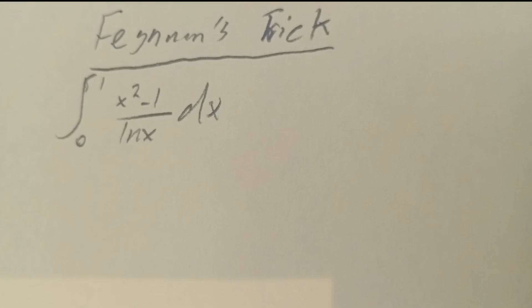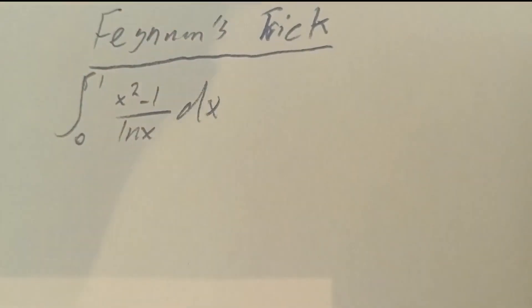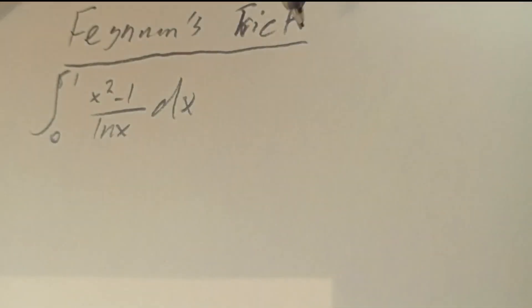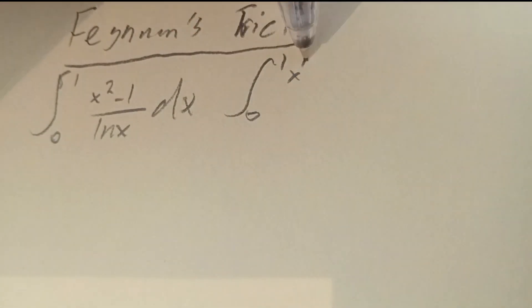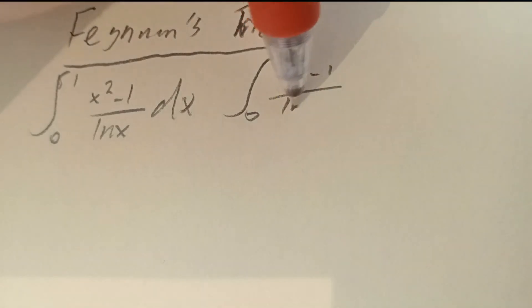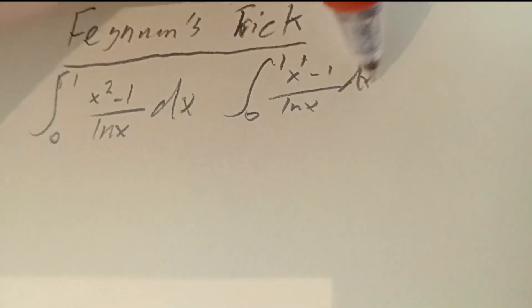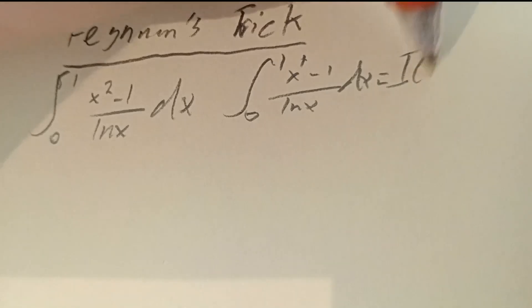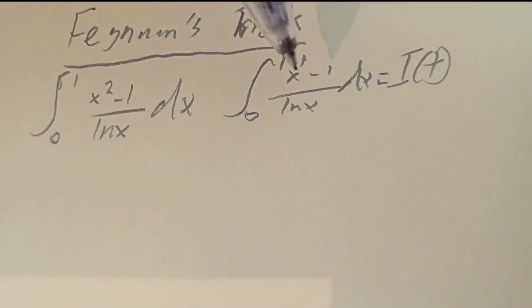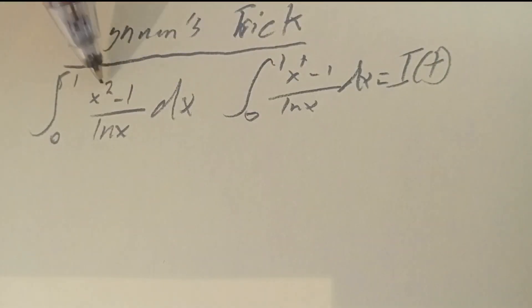What Feynman's trick is all about is parametrizing integrals. So let's have an integral from 0 to 1 of (x to the t minus 1) over ln x, dx, and let's call this I(t). Our target integral is I(2), because of our x squared.